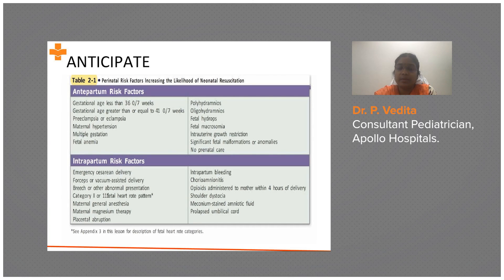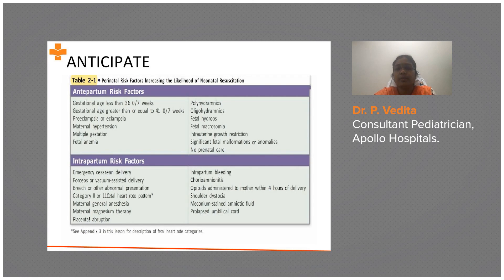Shoulder dystocia is significant because it is a difficult delivery and time may be lost. Other risk factors include meconium-stained liquor and prolapsed umbilical cord. These are the antenatal risk factors we must anticipate and discuss with the attending doctor or gynecologist to prepare for any further resuscitation needed from our side.